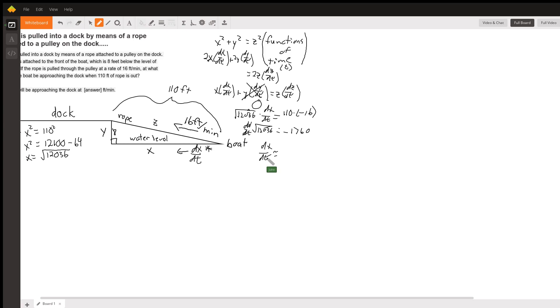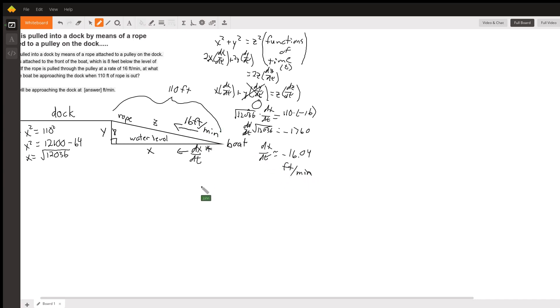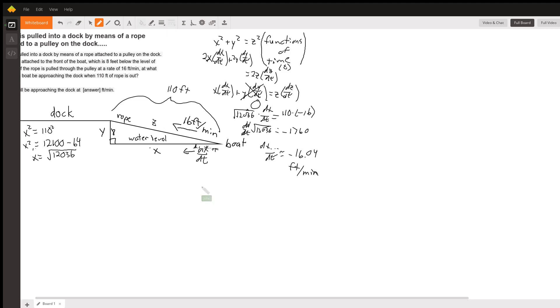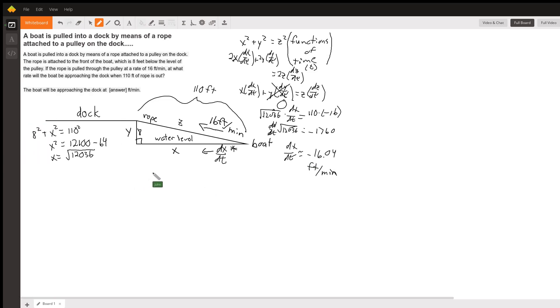We can then divide by that, and when we do that, we get approximately negative 16.04 feet per minute. Now, we notice this is not very different from this plain 16 feet per minute. And of course, the reason why it's negative is because the distance is decreasing by that amount. So the rate that it's going towards the dock is actually positive 16.04 feet per minute.